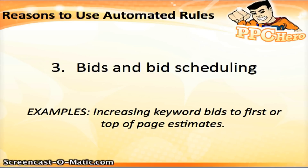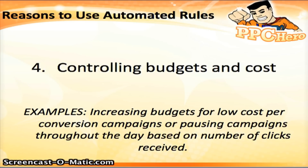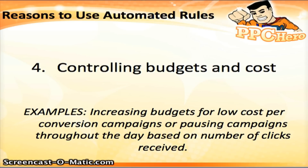The third reason to use automated rules is for your bids and bid scheduling, which allows you to increase keyword bids to first or top of page estimates. The final reason is to control your budgets and cost — for example, increasing budgets for a low cost-per-conversion campaign, or pausing a campaign throughout the day based on the number of clicks it's received.